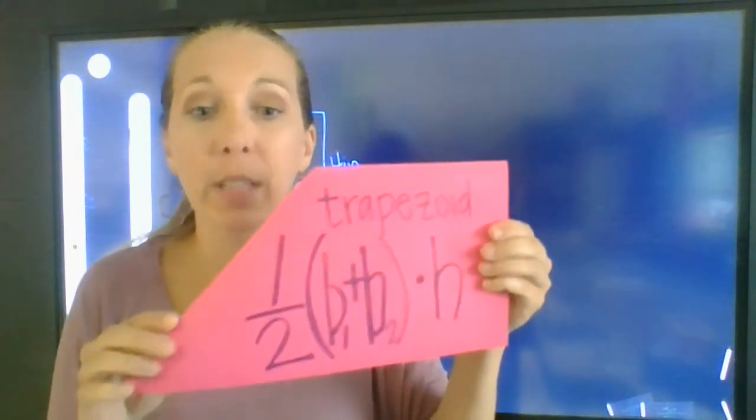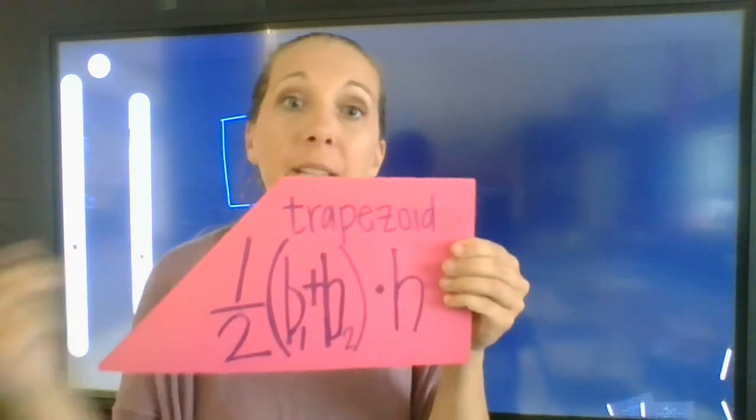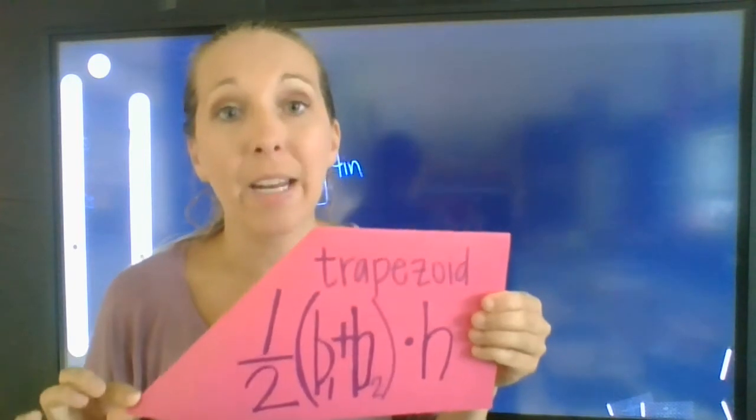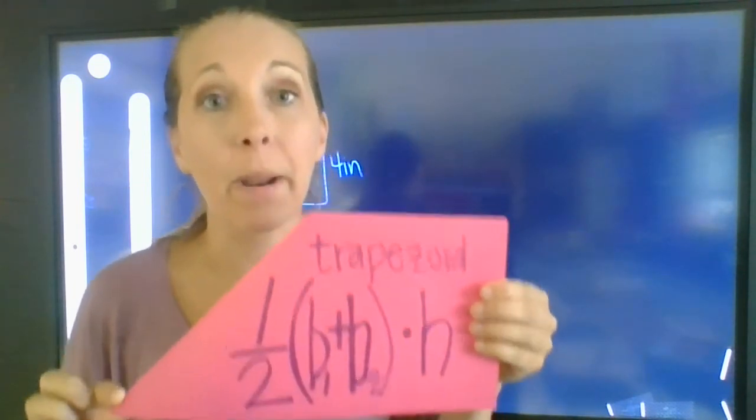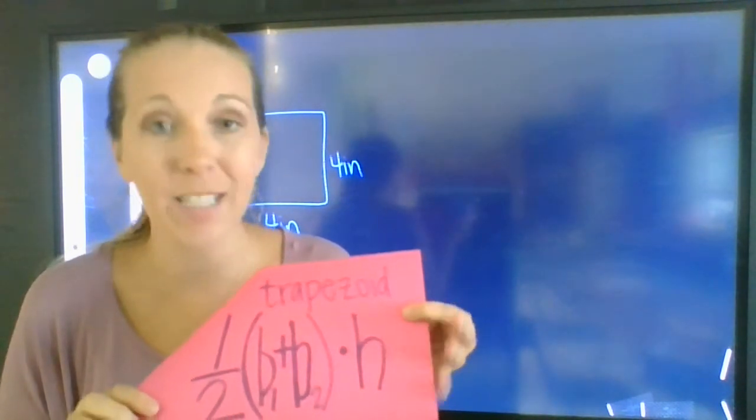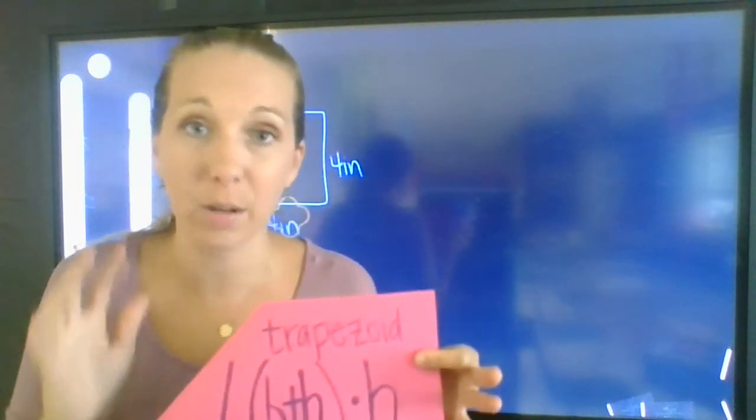Then we have a trapezoid. Trapezoid formula is very similar to the area of a triangle, except we're going to add the two bases. In order to have the two bases added, we have to make sure that the two bases are parallel to each other. That's how you know what the two bases are. And your height has to be a 90-degree angle that connects those two bases. So let's go ahead and take a look at how we're going to use these.